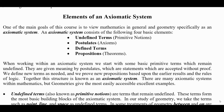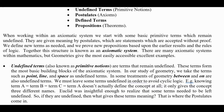When working within an axiomatic system, we start with some basic primitive terms which remain undefined. They're given meaning by postulates, which are statements accepted without proof. We define new terms as needed and prove new propositions based on earlier results and the rules of logic. Together this structure is known as an axiomatic system. Geometries give the most accessible and excellent examples.